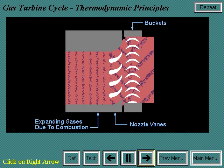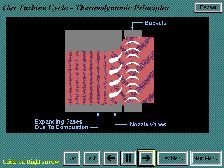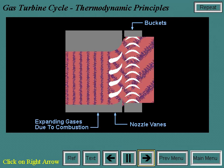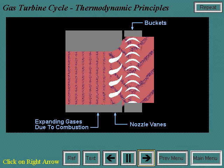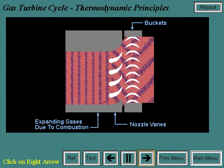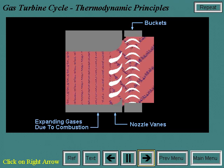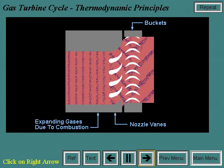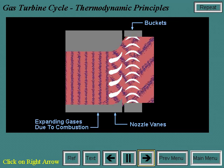The conversion of work in the turbine actually takes place in two steps. In the nozzle section of the turbine, the hot gases are expanded and a portion of the thermal energy is converted into kinetic energy. In the subsequent bucket section, a portion of the kinetic energy is transferred to the rotating buckets and converted to work. Typically, more than 50% of the work developed by the turbine section is used to power the axial flow compressor.